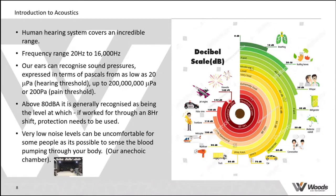If you subject yourself to high levels of noise you can start to impact your hearing. It's generally accepted that a level of around 80 dBA for an eight-hour day is considered the upper safe limit. Above that you're going to start to damage your hearing. The process of damaging your hearing can take a very long period of time — normally 10, 20, 30 years of exposure — but that's made worse because when you are 20 or 30 years older your natural hearing has also started to deteriorate, so those two things tend to happen at the same time.